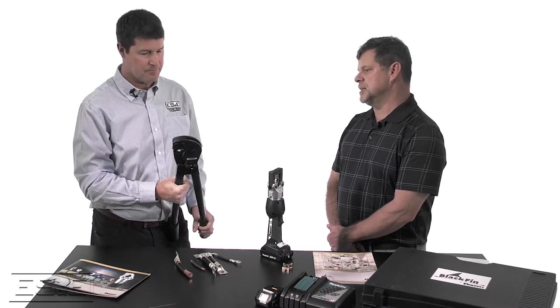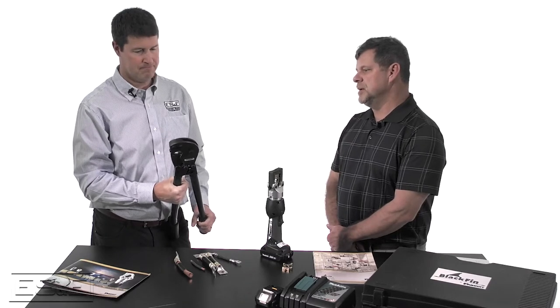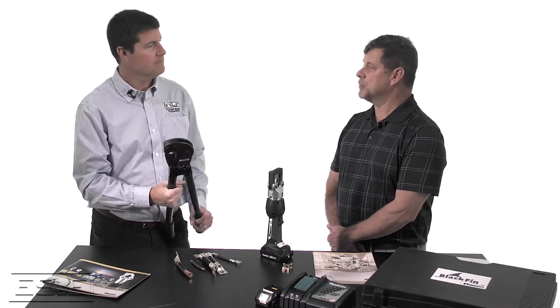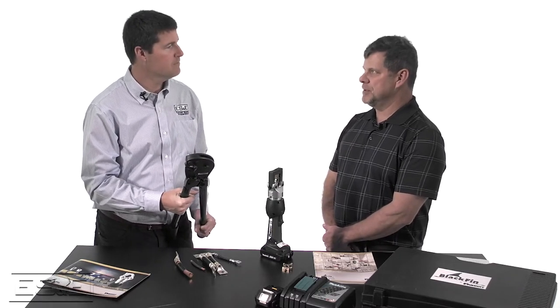What you've got there is, as you said, the CT720. It is a manual die-type crimper that's going to go from a number 8 up to a 500 MCM code cable. Really, it's good for all customers. Anybody from an electrical contractor to an OEM, as well as an MRO maintenance. It does really vertically play into all markets.